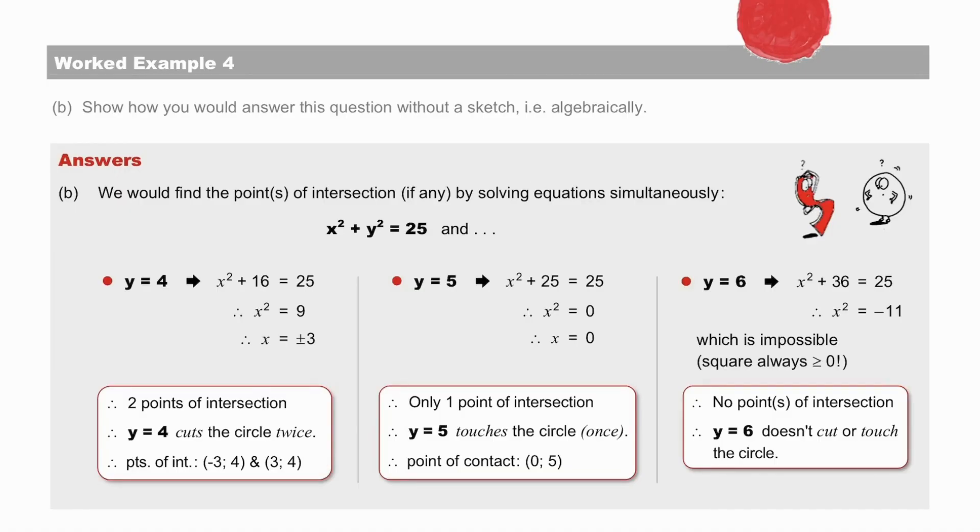When we solve this equation with y equals 5, we get only one answer. And one root means only one point of intersection, and y equals 5 touches the circle. The point of contact is confirmed to be 0, 5.